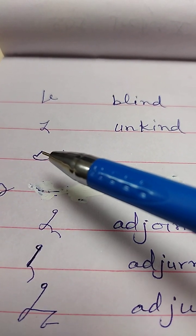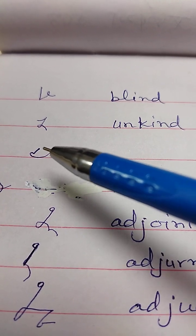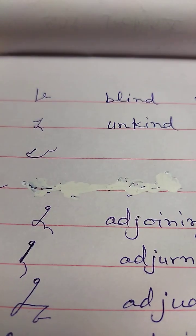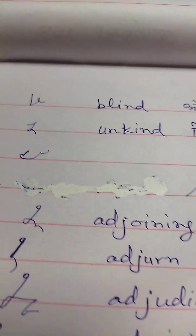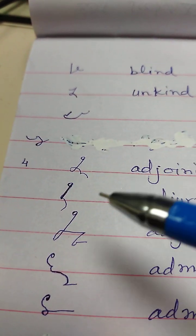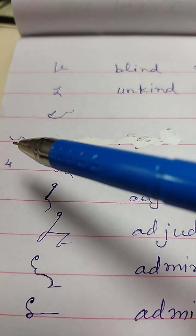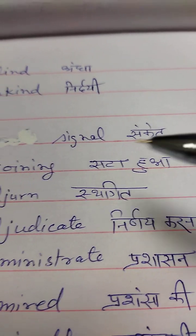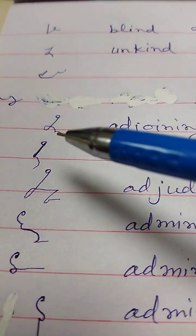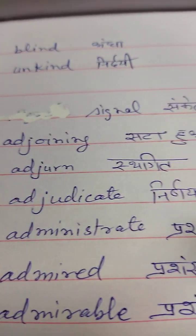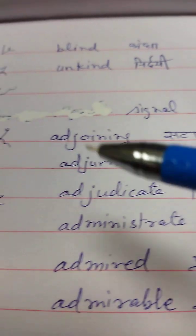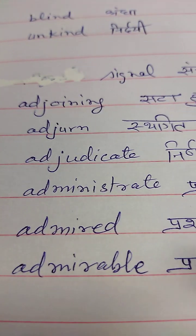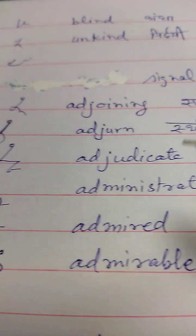There is something written here that I cannot read clearly. Signal — sanket. Adjoining — sata hua. Adjourn — sthagit.